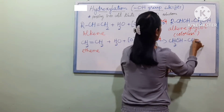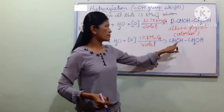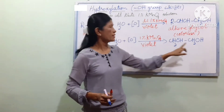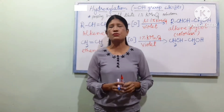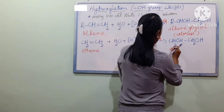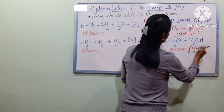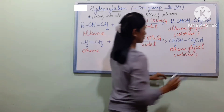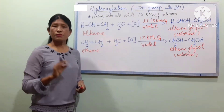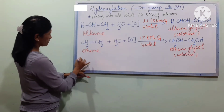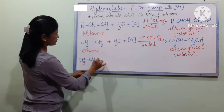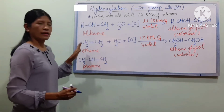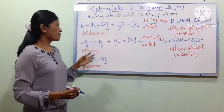The product is CH2OH-CH2OH — the glycol structure formed from the alkene hydroxylation reaction.